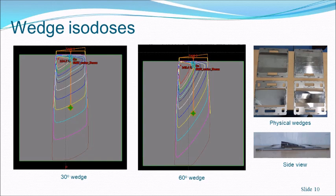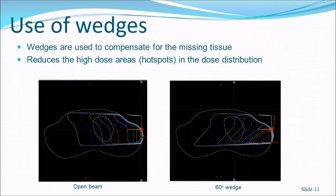The four wedges normally provided with a linear accelerator are 15, 30, 45, and 60 degrees. This is a side view showing the angle of the wedge.